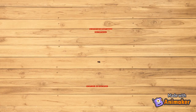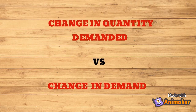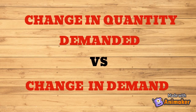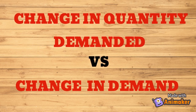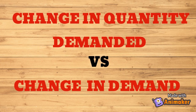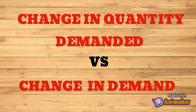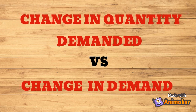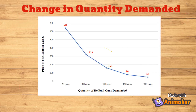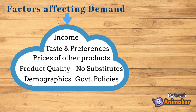Now that you have understood the exceptions to the law of demand, let us understand two important concepts: change in demand and shift in demand. Price is the most important factor that affects demand, so when price changes, demand changes too — we already saw that with our Red Bull example. Now let's discuss what happens when the other factors change.